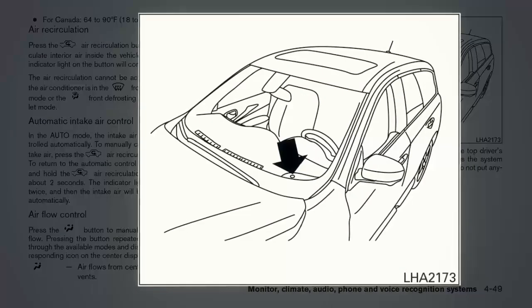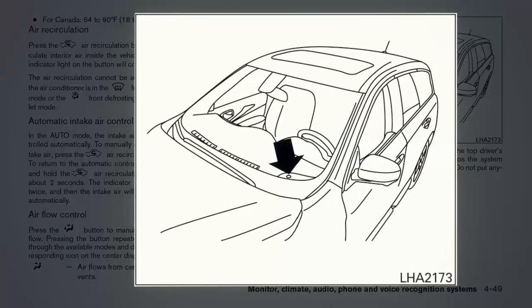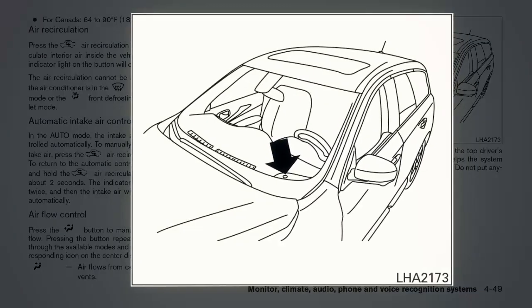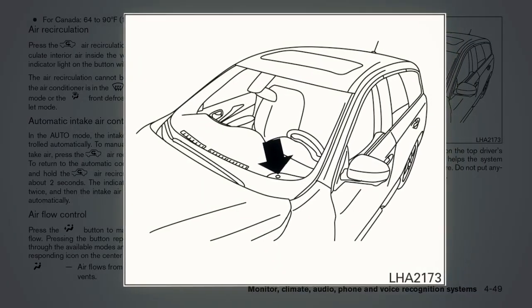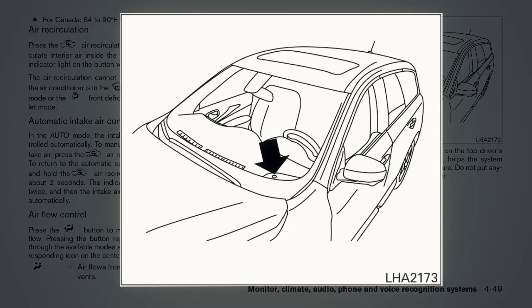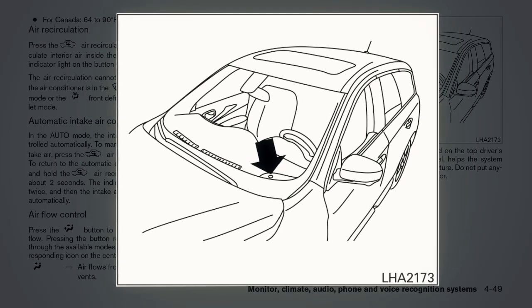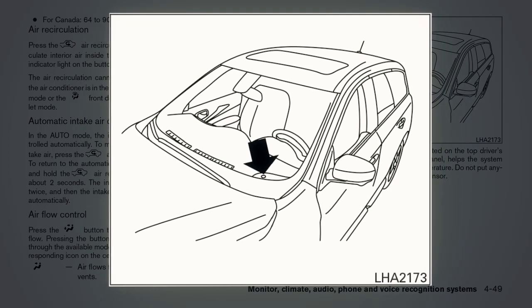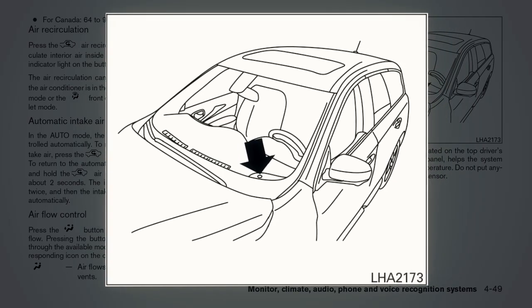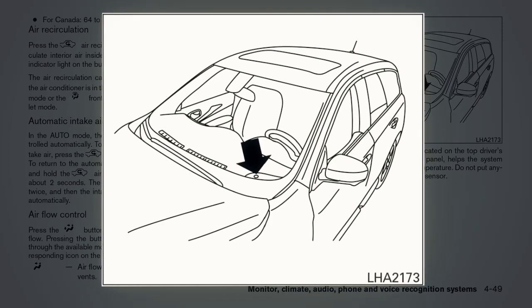There is a temperature sensor located on top of the dashboard near the windshield that helps regulate the automatic climate control settings. Keep this area clear of papers and other materials.